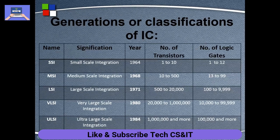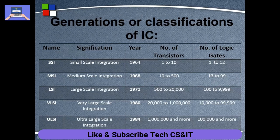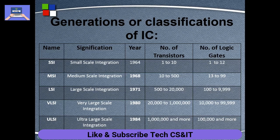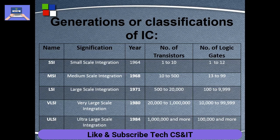First of all, there is SSI — Small Scale Integration. The concept of SSI was introduced in the year 1964, and the number of registers was only 1 to 10. The number of logic gates was 1 to 12. Logic gates include AND, OR, NOR, NAND — these are all gates. SSI introduced multiple gates of this type.